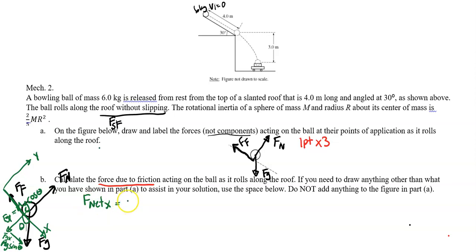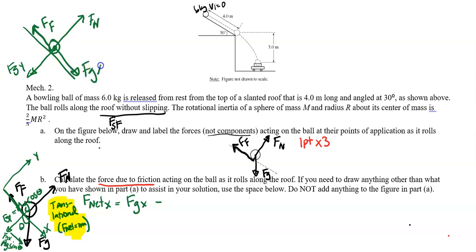Let's set up F_net X first. This is translational motion, so we'll use F_net equals MA for that. F_net X equals what? F_GX minus F_F. F_net X is MA, F_GX is going to be MG sine theta, and F_F we do not know. That is our linear equation of motion.